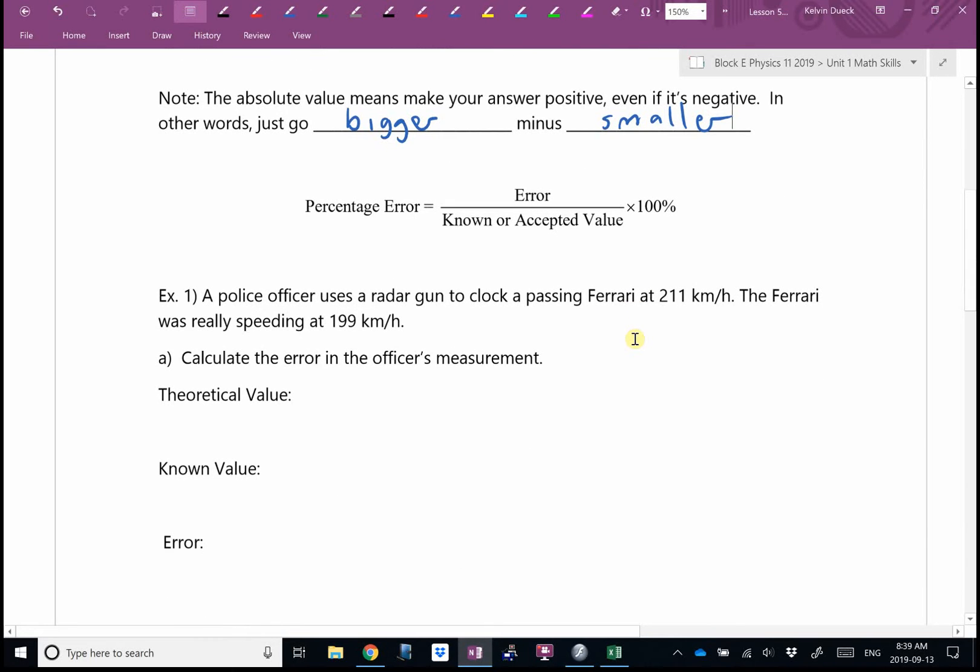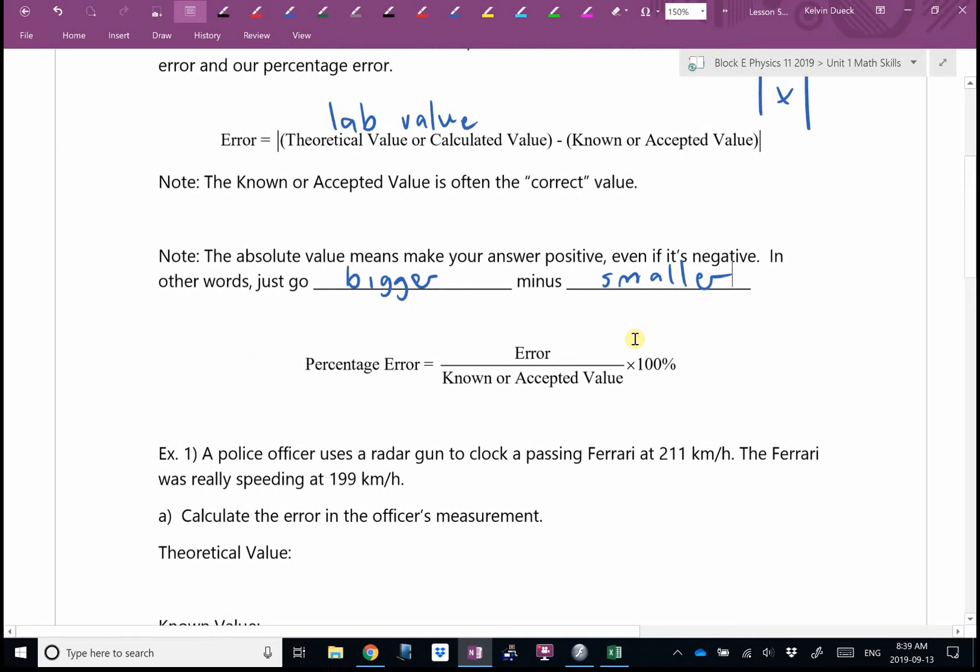Then to turn that into a percent, you take this answer right here and you divide it by the correct answer, the one that you know is right. Just like if you're trying to figure out your percent on a test, you would say, the test is out of 60, I got 43 out of 60. I would go 43 divided by the goal or correct answer, 60, and then times 100 to make it a percentage. It's the same math.